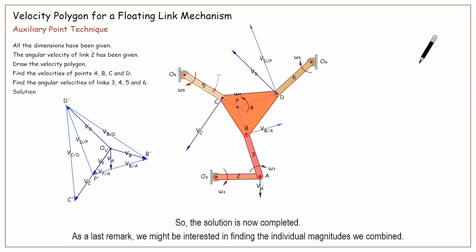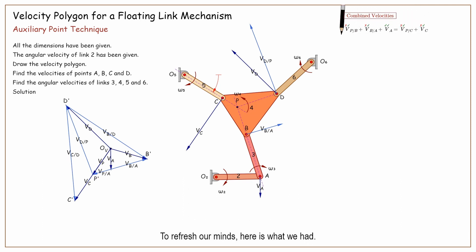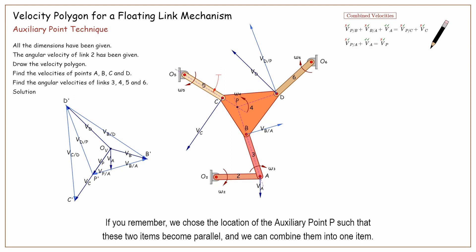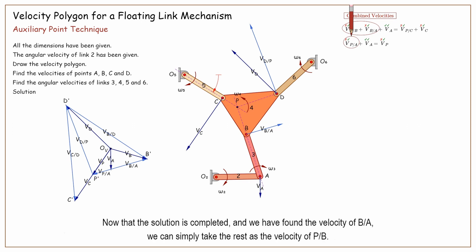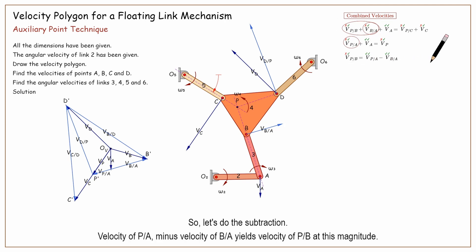So the solution is now completed. As a last remark, we might be interested in finding the individual magnitudes we combined. To refresh our minds, here is what we had. We chose the location of the auxiliary point P such that these two items become parallel, and we can combine them into one item. Then, after we found the velocity of P with respect to A, we could not distribute it between the combined items. Now that the solution is completed and we have found the velocity of B with respect to A, we can simply take the rest as the velocity of P with respect to B. So, let's do the subtraction: velocity of P with respect to A, minus velocity of B with respect to A, yields velocity of P with respect to B at this magnitude.